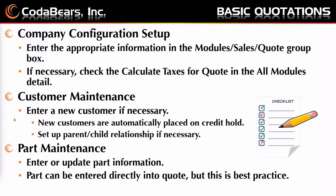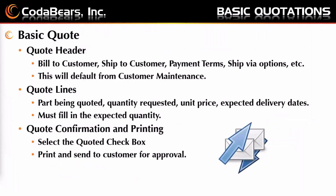On part maintenance, you might have to enter or update the part information. The part can be entered directly into the quote, but best practice is usually to go to the part itself and then pull it into the quote. Then we're going to look at the basic quote header — we pick the bill-to customer, ship-to customer, payment terms, ship via options, etc. These will default from customer maintenance, and I'm going to show you this in a Kinetic system.